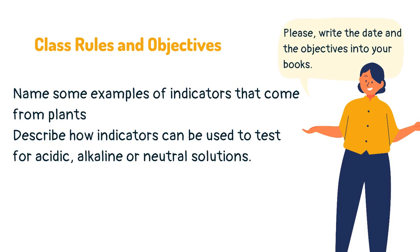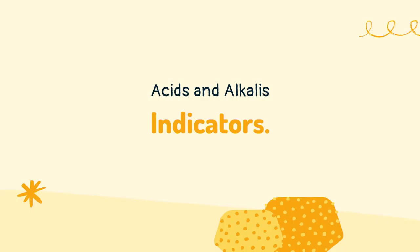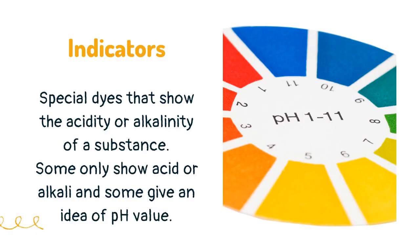Today you are going to learn about indicators. Indicators are special dyes that show the acidity or alkalinity of a substance. Some only show acid or alkali, and some give an idea of pH value.